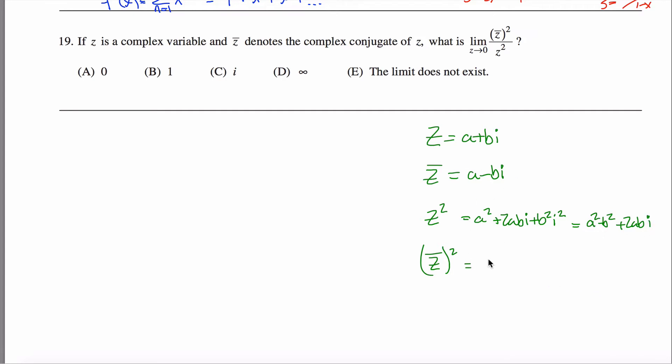And if I square the complex conjugate, I get almost the same thing. The only difference here is when I'm foiling things out, I'd get minus 2abi. So I'd still get a squared minus b squared, except now I would get minus 2abi.